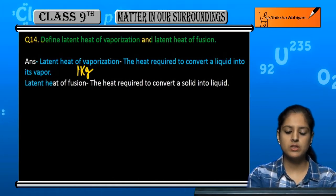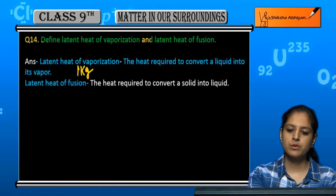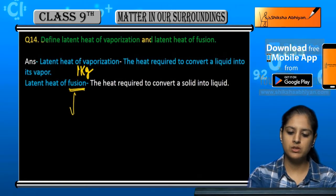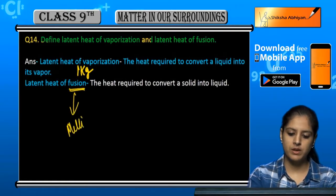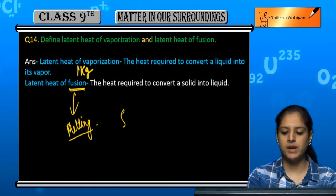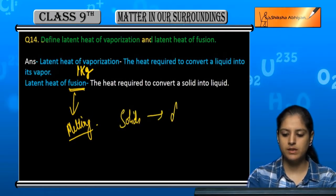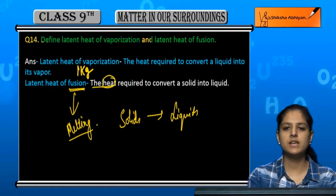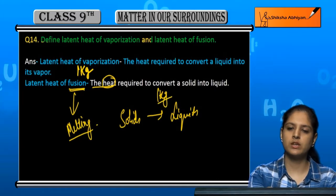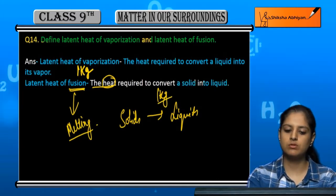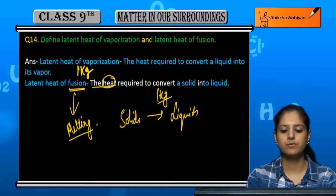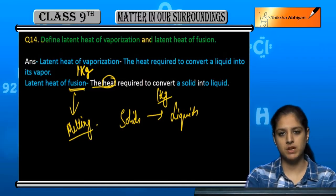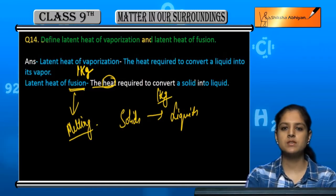Talking about the latent heat of fusion — fusion's other name is melting. So fusion refers to melting, and melting happens from solids to liquids. The heat required to convert one kg of solid to liquid is called the latent heat of fusion. So vaporization is converting one kg of liquid to gas, while fusion is converting one kg of solid to liquid.